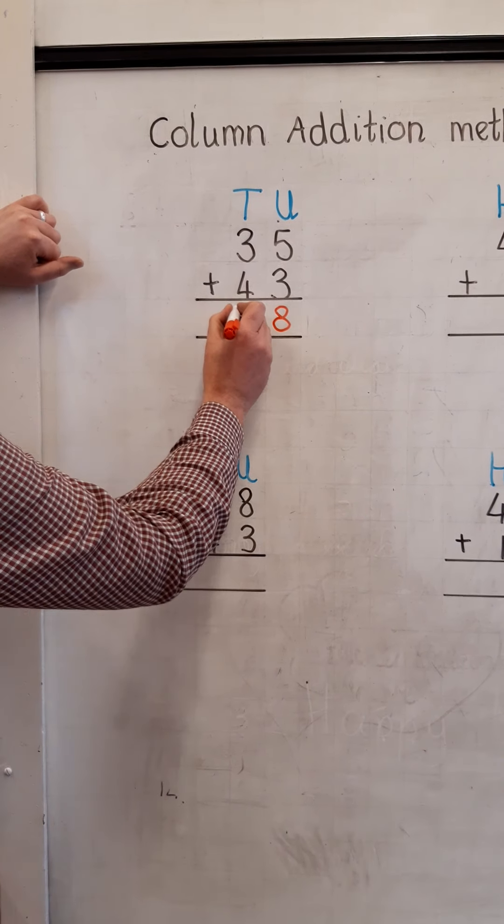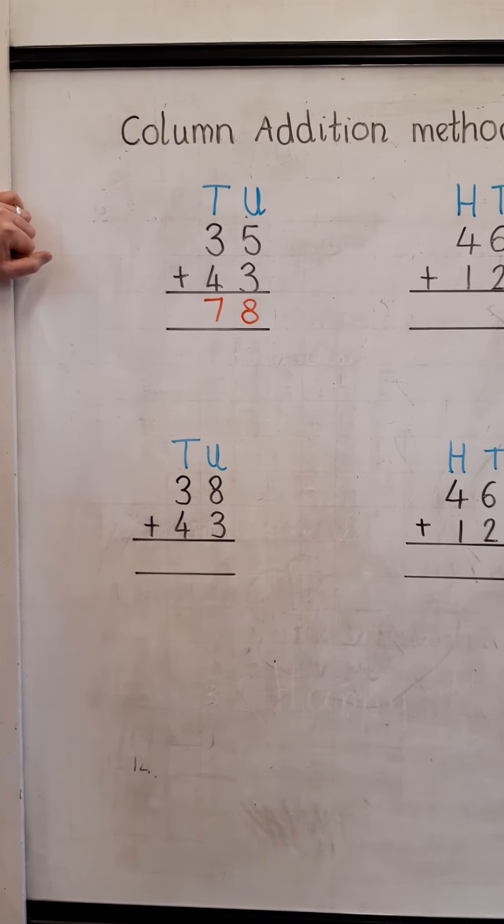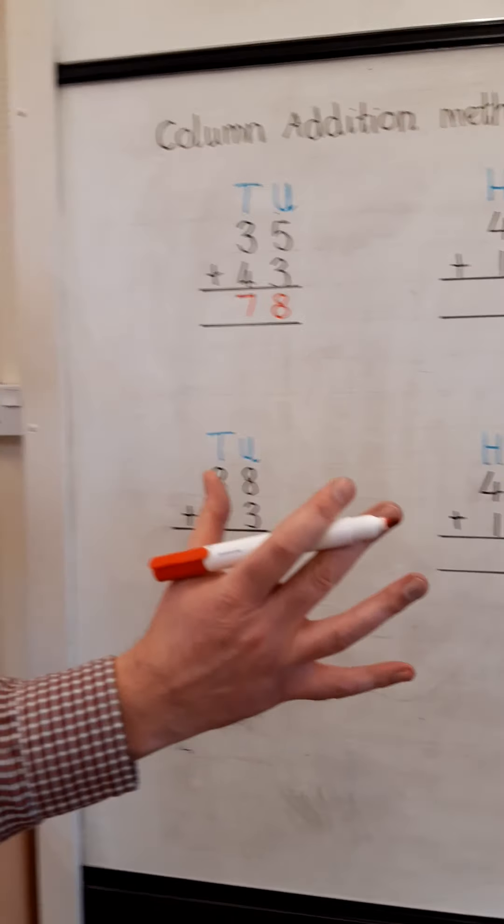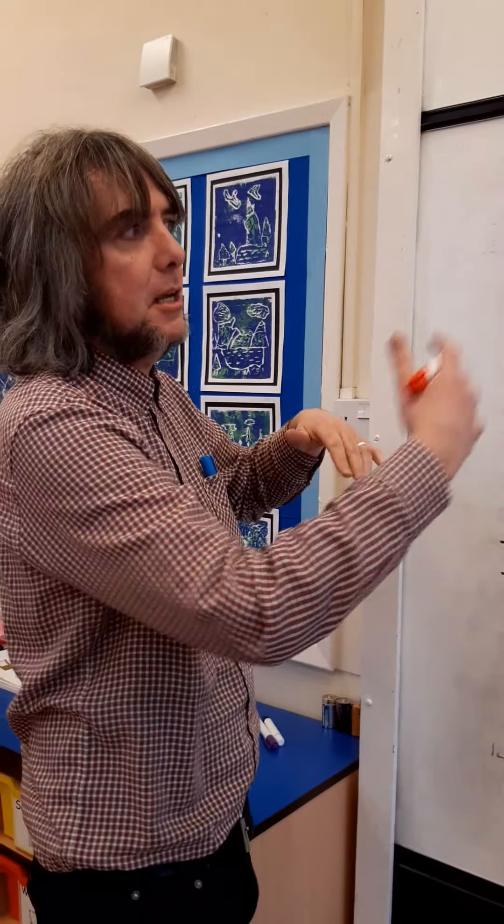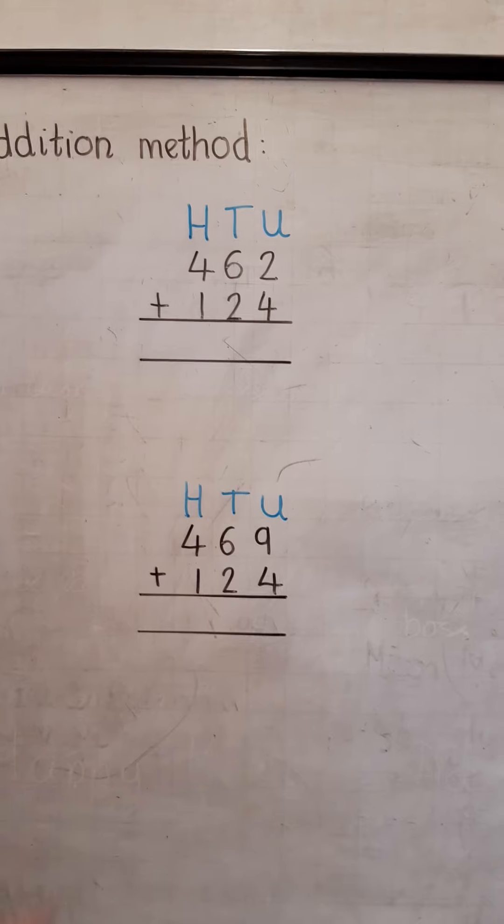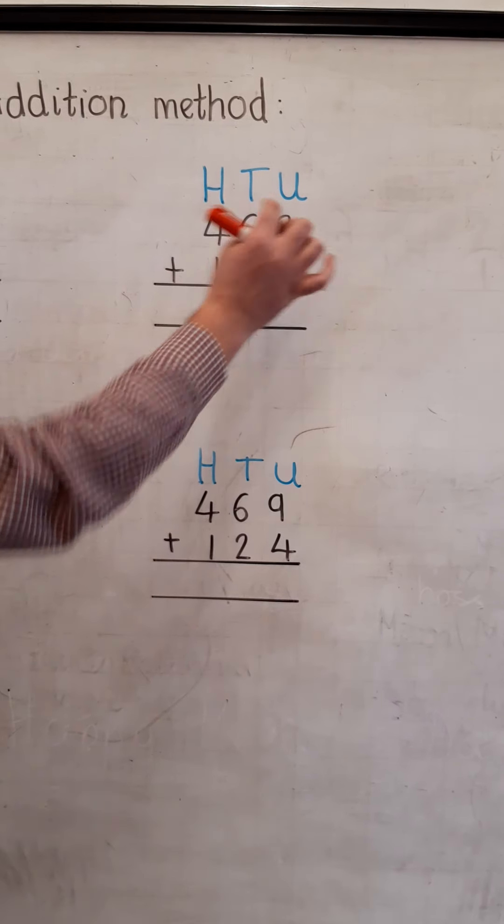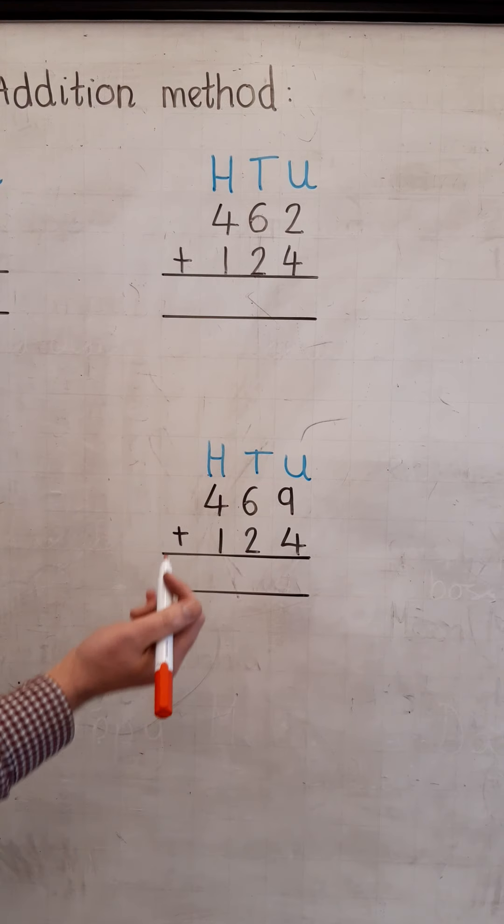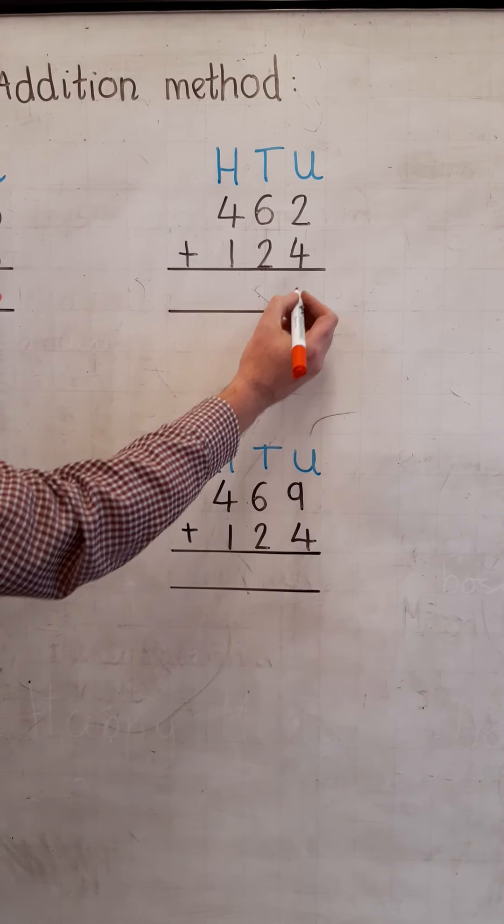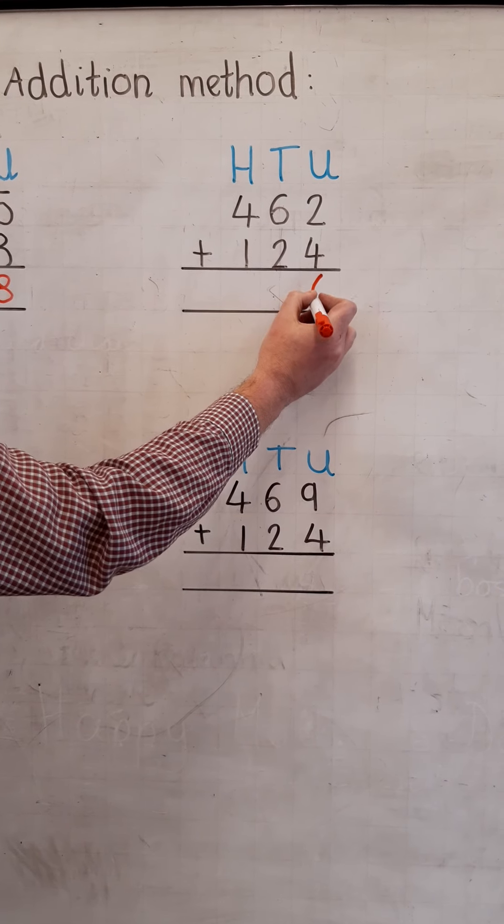Now no matter how large the number, we still go through the same procedure. So with these three-digit numbers we have four units, add two units, gives us a total of six units which we write inside the big equal sign in the units place, six units.